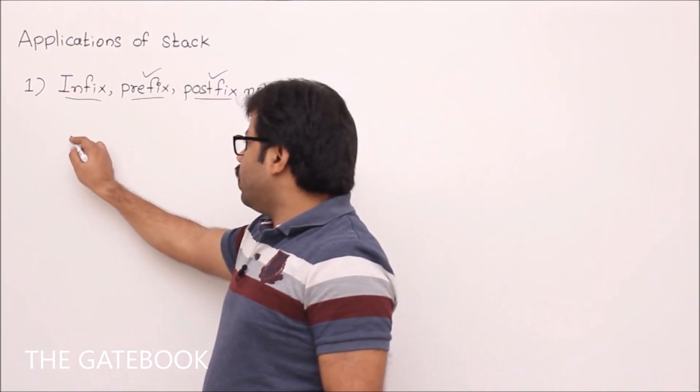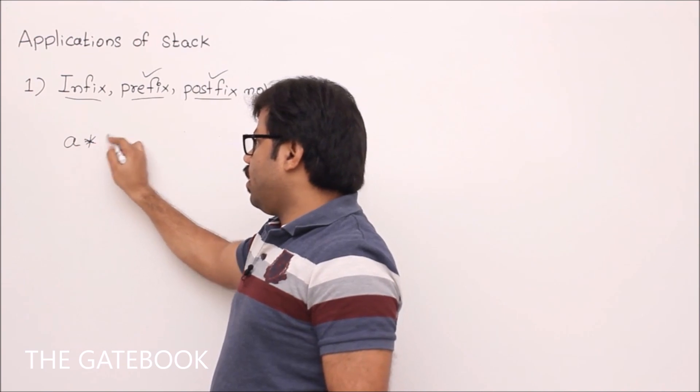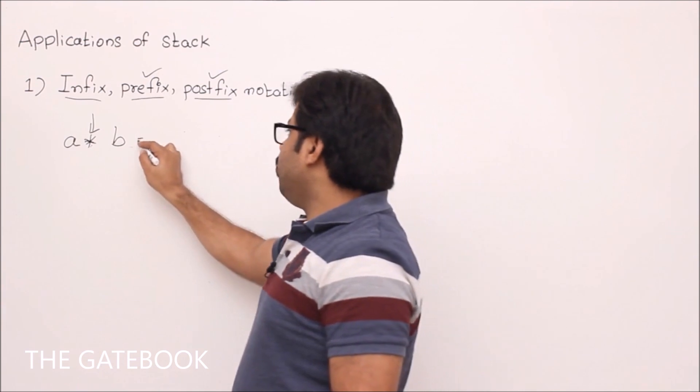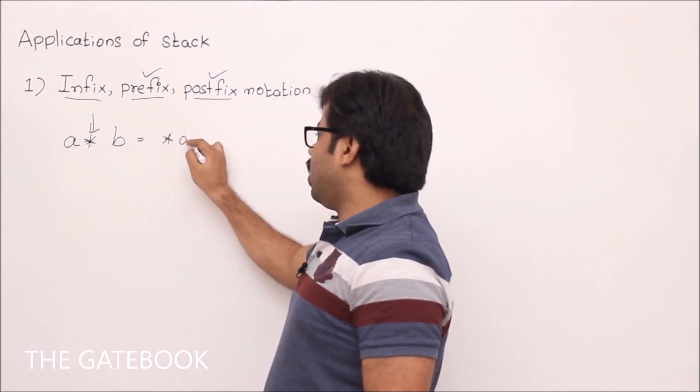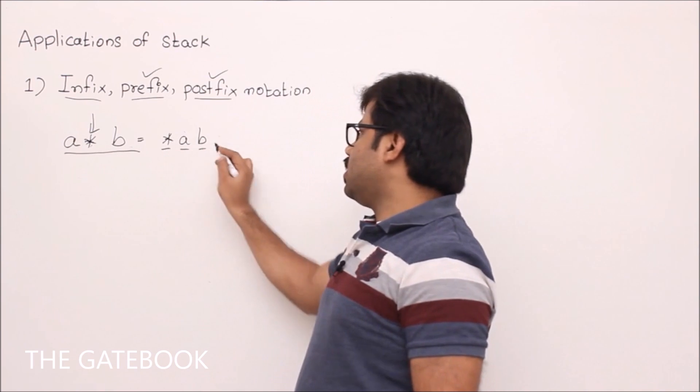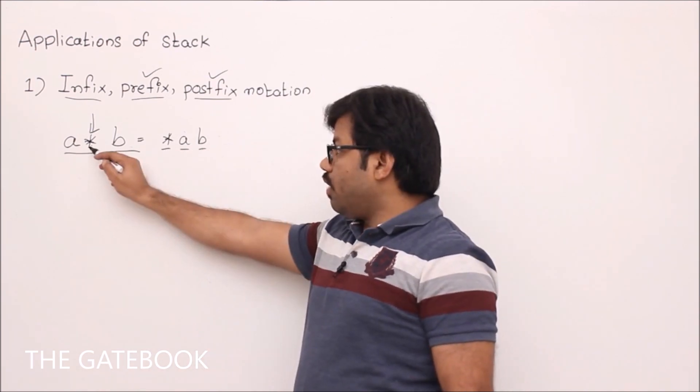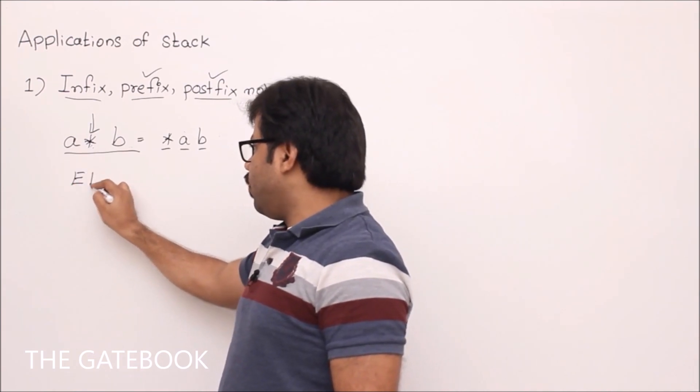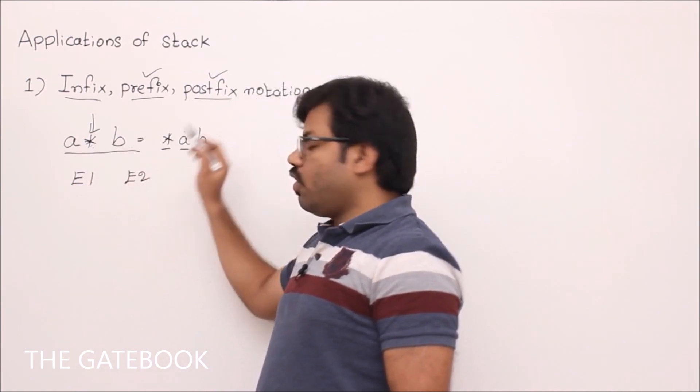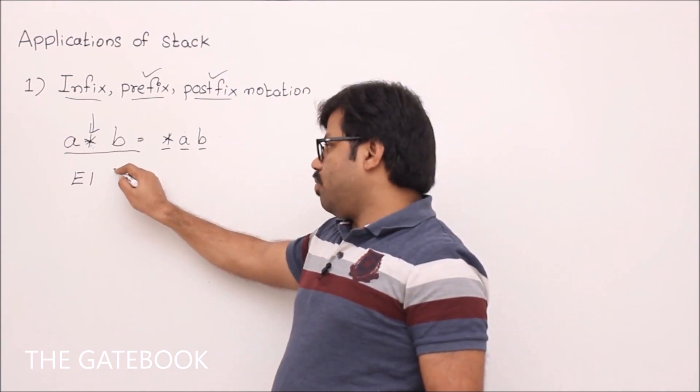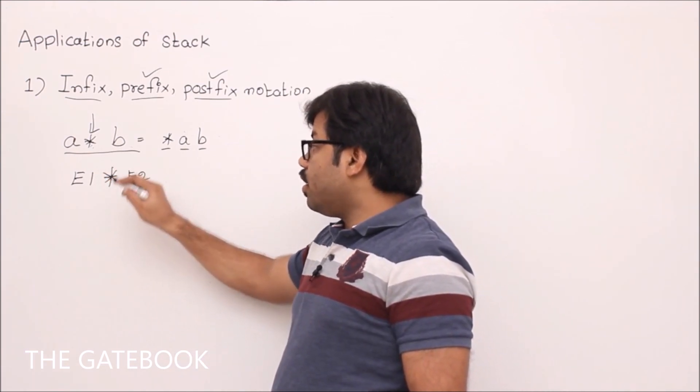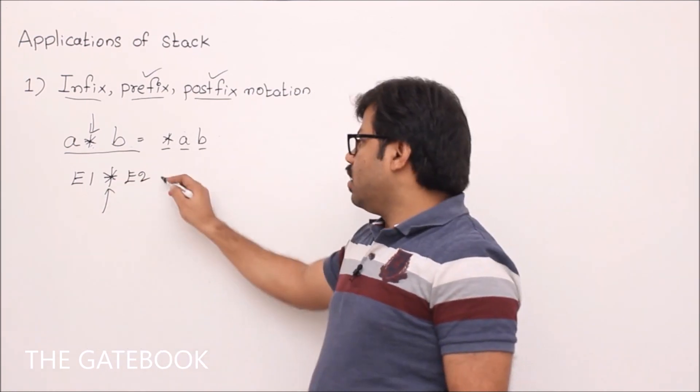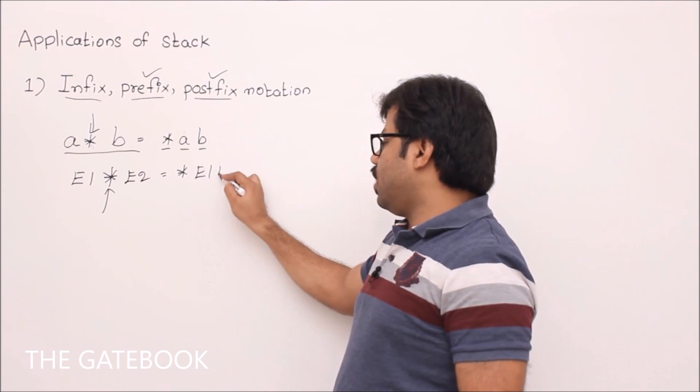Remember these rules. First rule is, whenever you want to convert one operator, like this operator star to prefix, simply write star AB. That means for this infix expression, prefix expression is star AB. Now, if you have two expressions E1 and E2, whatever big they are, in between them you have an operator, then simply write star E1, E2. That's it.